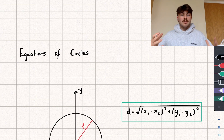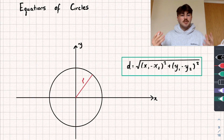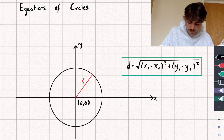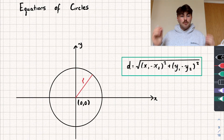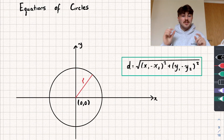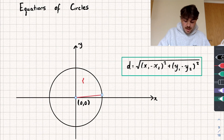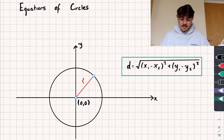Let's start off with the most basic thing, which is the equation of a circle centred at the origin. That means we're going to find the equation of the circle where the centre is at the point (0, 0). A circle is a set of all points that are equidistant from some other point — all points the same distance away from some centre point. In this example, we have a circle centred at the origin with a radius of r, so whichever point we pick on the circle is length r away from the centre.